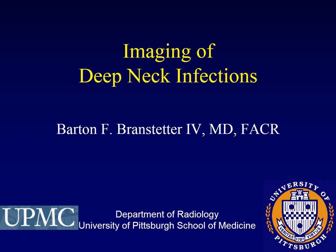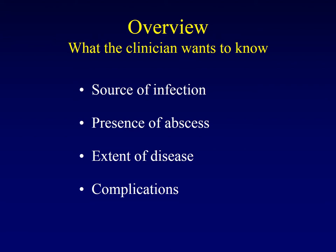This is the first in a series of lectures on imaging of deep neck infections. The clinicians are particularly interested in several items when they order an examination of the neck to assess for infection. The most important things the radiologist needs to comment upon are the source of infection, the presence or absence of abscess — because that determines whether the patient will go to surgery — the extent of the disease, which determines how much surgery the patient gets, and complications of deep space infections, which we'll talk about in detail.